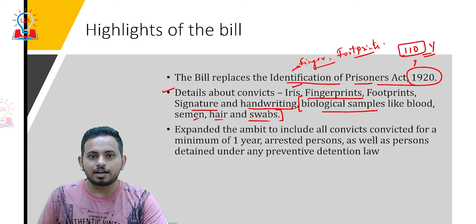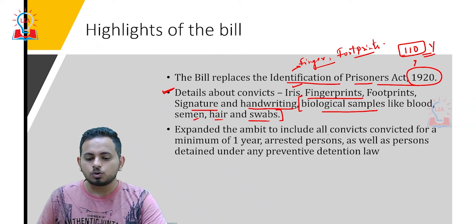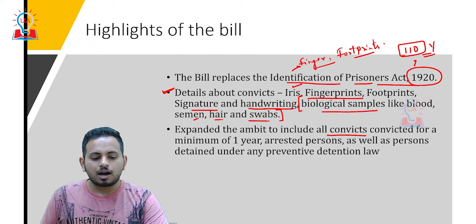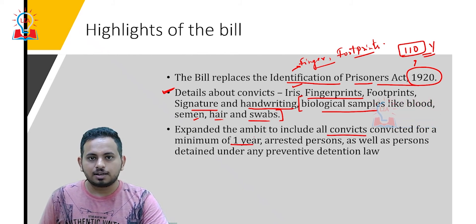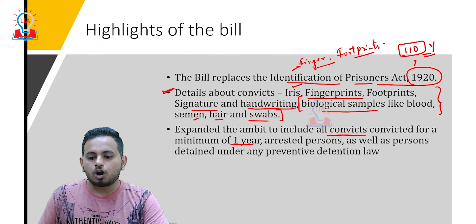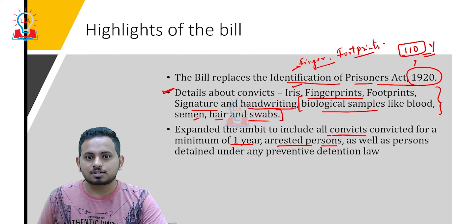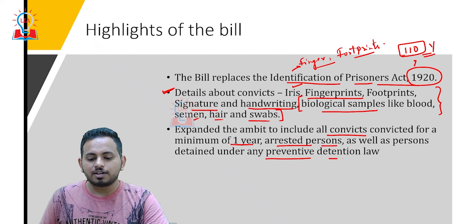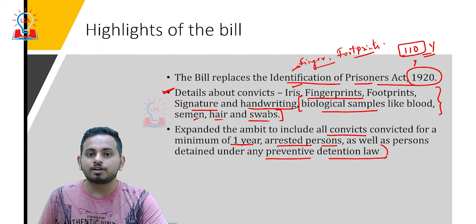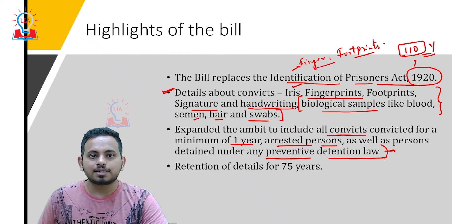There are three categories of persons from whom identification marks can be collected. The first includes all convicts convicted for a minimum of one year — such persons must produce all these documents. The second is the arrested person — even someone who is just arrested has to produce all these documents. The third is a person arrested under preventive detention law — even this person is supposed to produce all identification marks including biological samples.